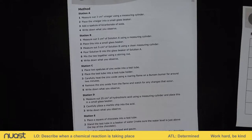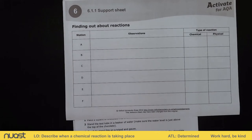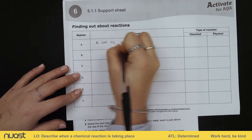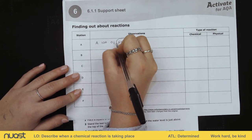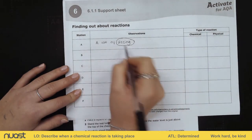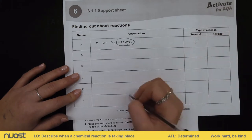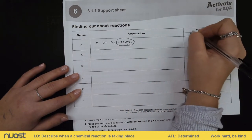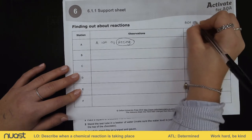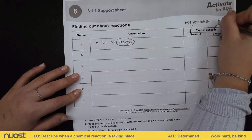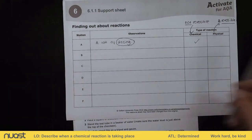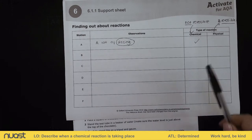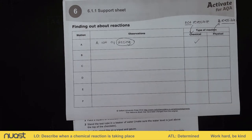We're going to fill in our results table. For station A, our observation was we saw a lot of fizzing. I'm going to circle the key observation that leads us to the decision of whether it's a chemical or physical change. Fizzing is a sign of a chemical change. Remember from your earlier lesson, a chemical change is not reversible, whereas a physical change is reversible. This reaction of vinegar and bicarbonate of soda is not reversible — we wouldn't be able to get that bicarbonate of soda back. So we've got a tick in our chemical reaction box.